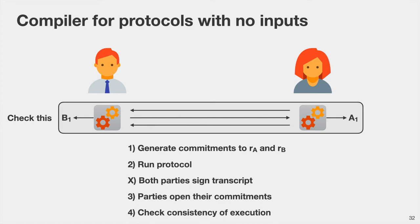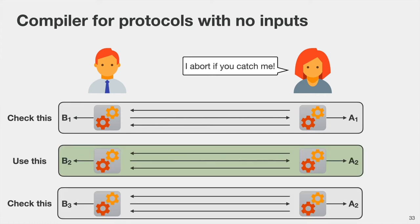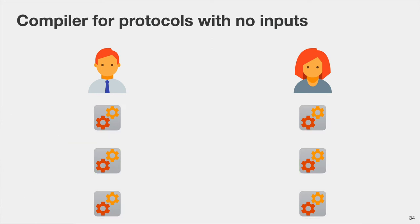To make this approach publicly verifiable, we also want the parties to sign the full transcript. After running the protocol both parties sign the transcript, then open the commitments. Now if Alice cheats and still opens the commitment, Bob will have proof of Alice's misbehavior and can show the signed transcript and commitment opening to a third party. However, Alice may simply decide to abort and not open her execution if she doesn't like which execution is being checked.